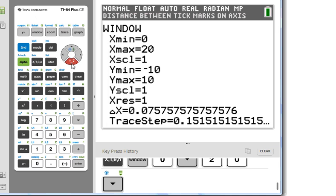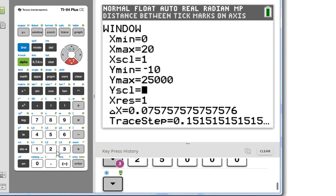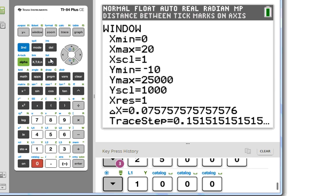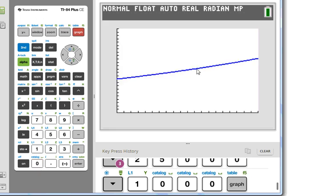For my y scale, I'm going to go from negative 10, up to 25,000 by an amount of 5,000. And then we graph this equation, and this is what it looks like.